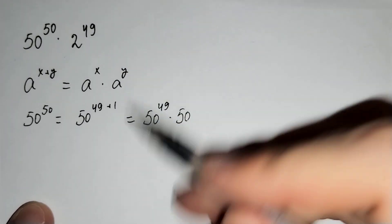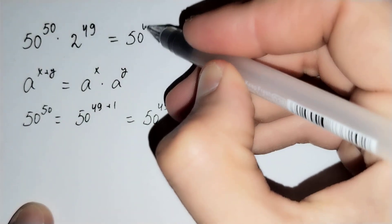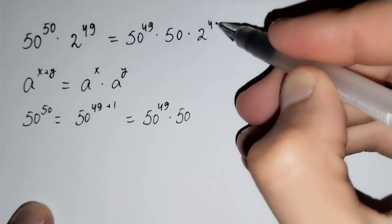Then, let's put this above. This is equal to 50 power 49 times 50 times 2 power 49.